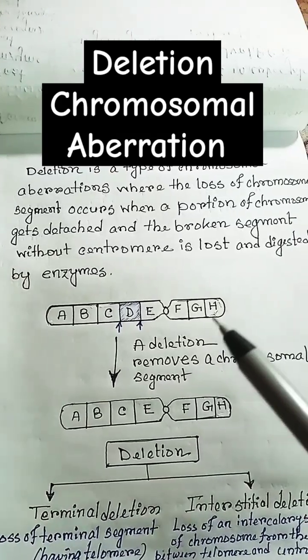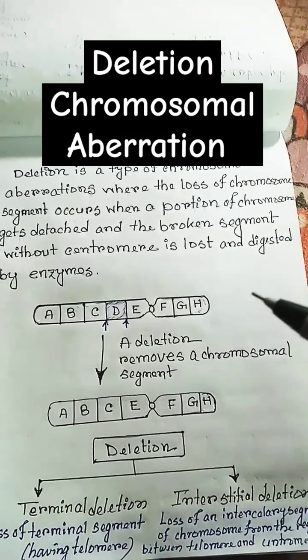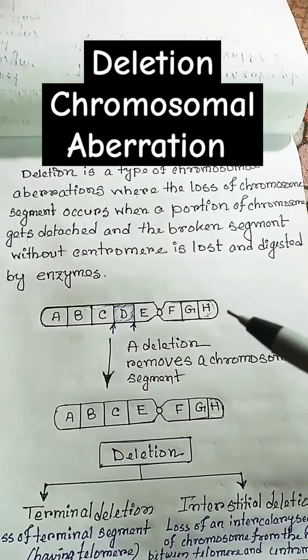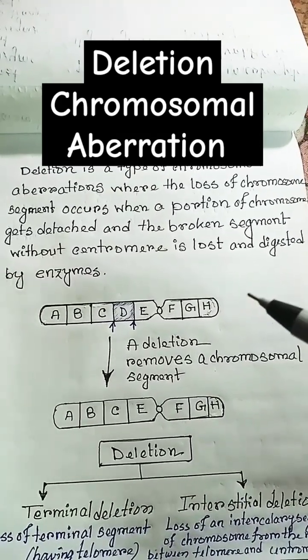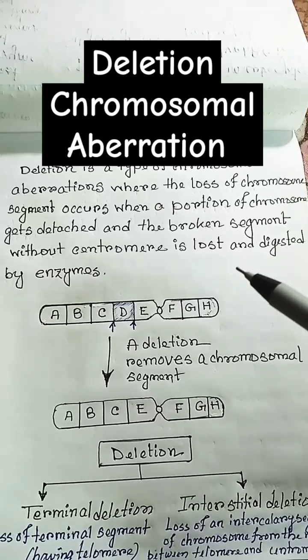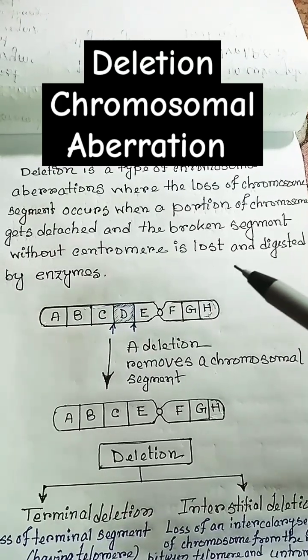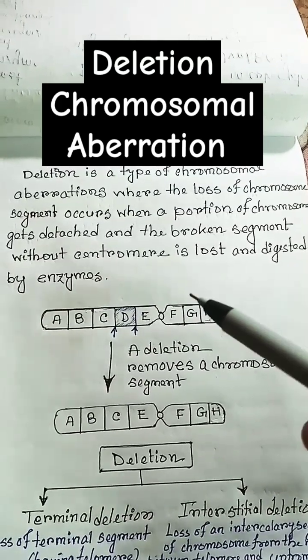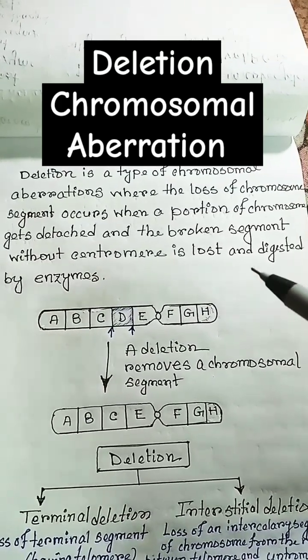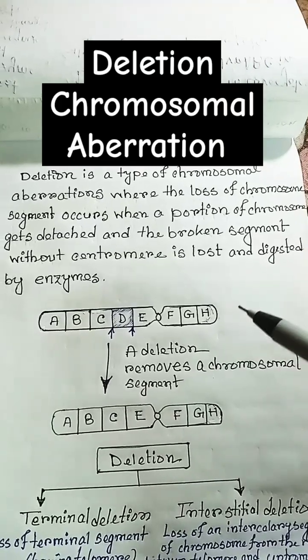What is deletion? Deletion is a type of chromosomal aberration where the loss of a chromosome segment occurs when a portion of the chromosome gets detached and the broken segment without a centromere is lost and digested by enzymes.